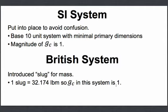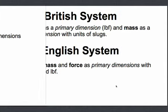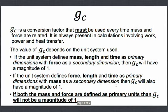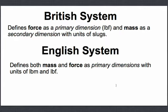The British system introduced the slug for mass, and 1 slug is equal to 32.174 pound mass, so GC in this system is also equal to 1. The British system defines force as a primary dimension in pound force, and mass as a secondary dimension with units of slugs. The English system defines both mass and force as primary dimensions with units of pound mass and pound force. So if both mass and force are defined as primary units, GC will not have a magnitude of 1 — meaning for the English system, GC does not equal 1, but for the British and SI systems, it does.